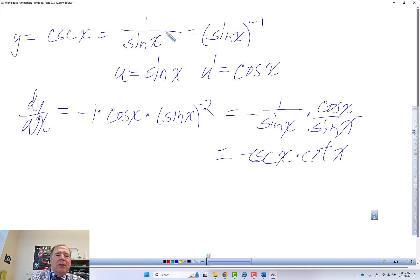Is there another way to do this? We could use the quotient rule. U over v prime equals v u prime minus u v prime over v squared. U is the numerator 1, so u prime is 0. V is sine of x, so v prime is cosine of x.